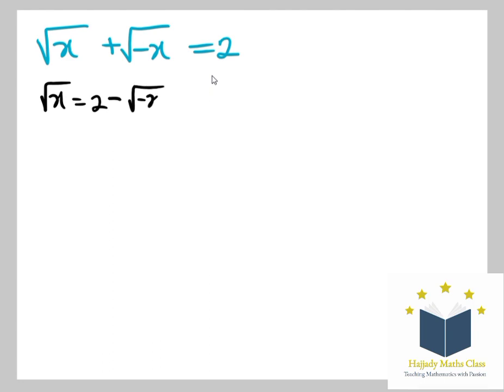So squaring both sides, I'm having (√x)² = (2 - √(-x))². Squaring a root is going to cancel out, so here I'm going to have x equals...